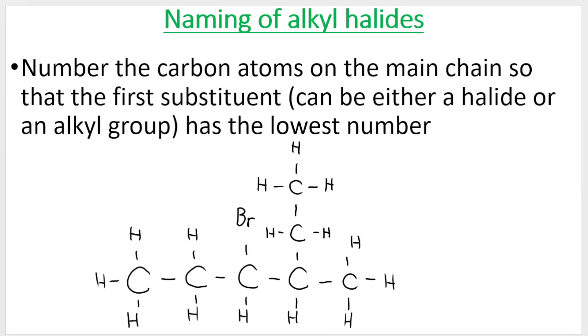A very important rule when you're naming haloalkanes is we must number the carbon atoms on the main chain so that overall, the substituents have the lowest number. So this is a substituent. If you look at the longest chain, we've got 1, 2, 3, 4. Don't be fooled, it's not 5. Do you see there's actually 6 carbons in the longest chain? So on this carbon and on this carbon, I have substituents.